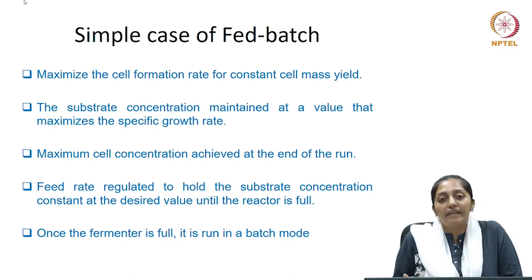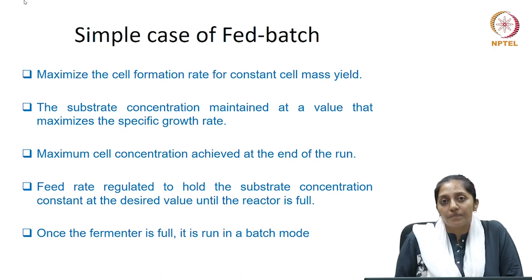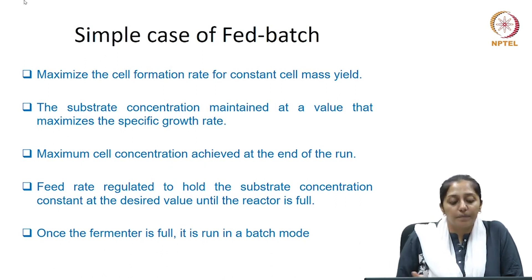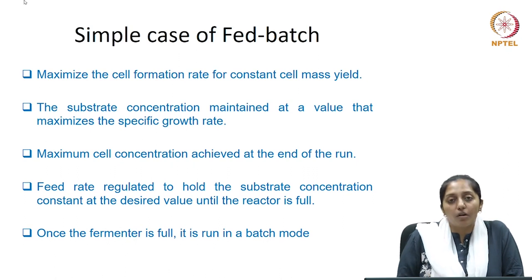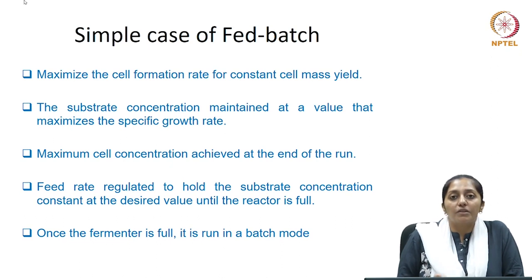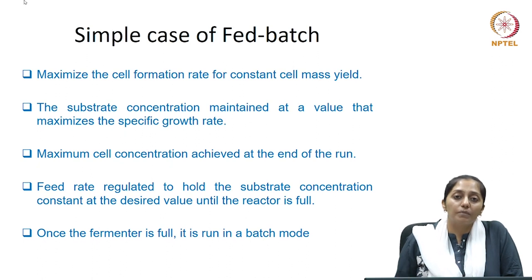The substrate concentration is maintained at a value that maximizes the specific growth rate, which means the substrate concentration is kept at a value where the specific growth rate is maximum. The maximum cell concentration can then be achieved at the end of the run. To ensure maximum cell concentration with maximum yield and productivities, one keeps the substrate concentration at a level where the specific growth rate is maximum and the cell formation rate (growth rate) is maximum at constant cell mass yield.